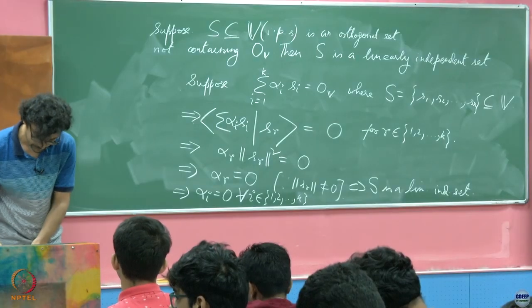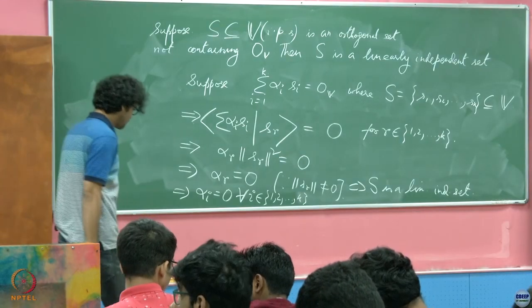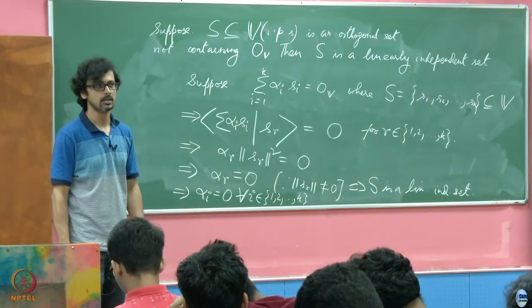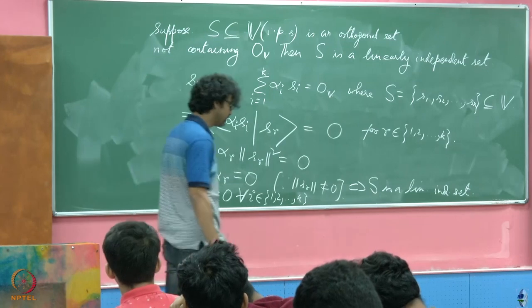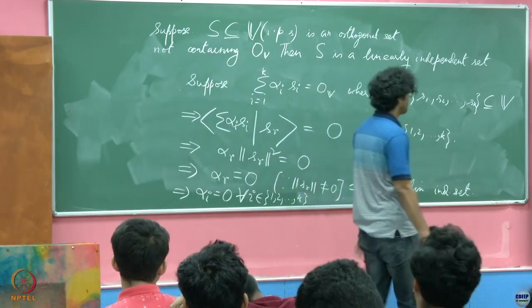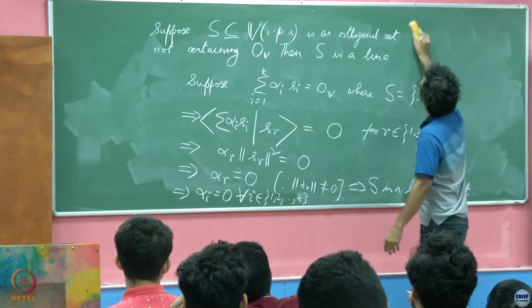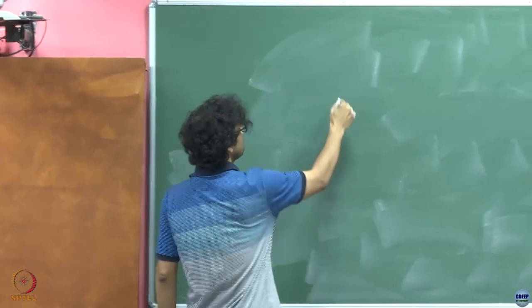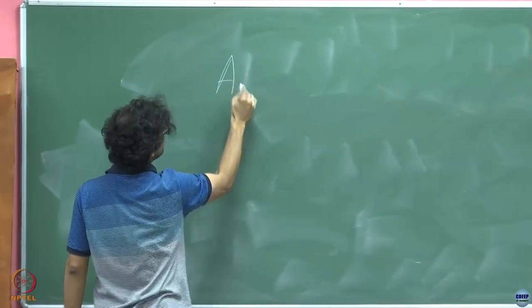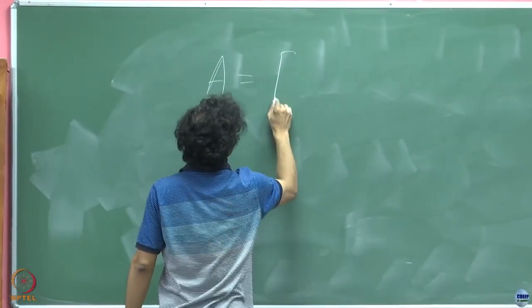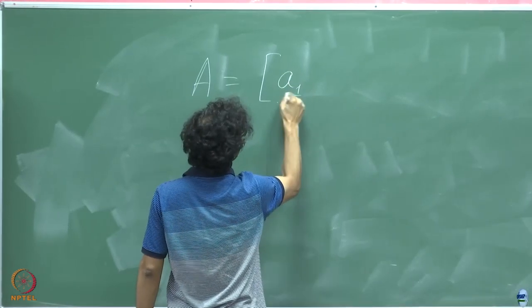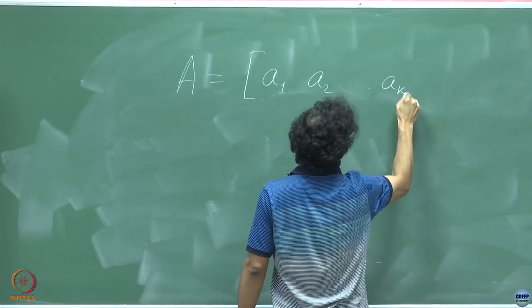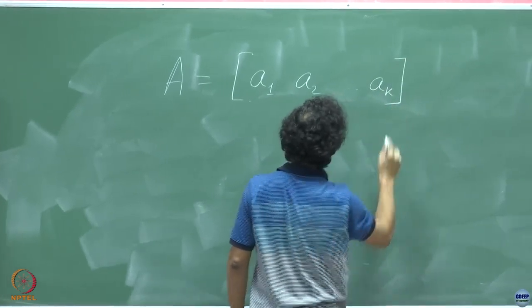In the next module, we shall see what is the benefit of having such an orthogonal set, particularly in view of the problem we have concerned ourselves with for such a long time — that is, to solve equations like Ax equals b. Now consider a matrix A given as A1, A2 until Ak.